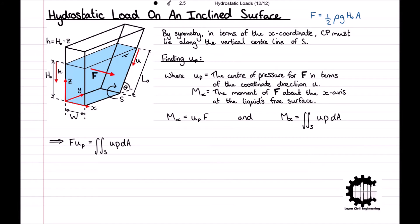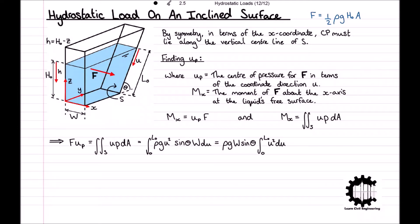Substituting in our pressure distribution of p equals rho g u sine theta, and then our expression for dA of dA equals w du, we get the integral of rho g u squared sine theta times w with respect to u from 0 to l0. And then we can factor the constants out of the equation, giving us rho g w sine theta times the integral of u squared with respect to u from 0 to l0.